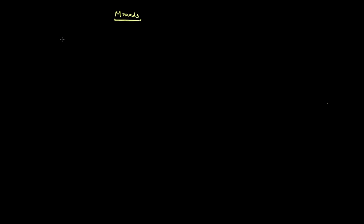Let's create our type signature. I have something called concatenate, and it has a type signature of IO String. This may be obvious if you've watched my previous videos — I have this side effect represented via the IO monad. As I'm trying to concatenate my strings together, I'm going to have a side effect represented via this IO monad.